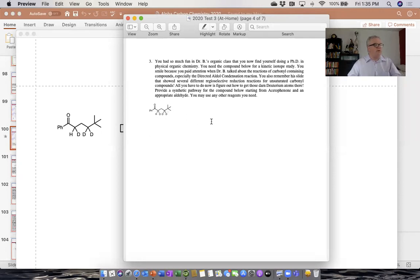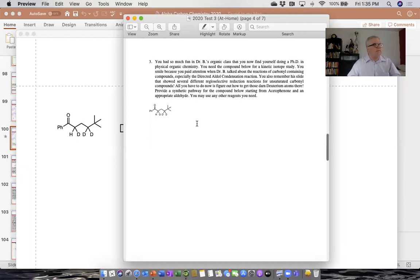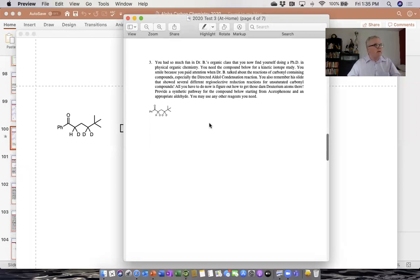Oftentimes we want to do these for mechanistic studies, sometimes for enzyme studies, just to get some information about physical organic things or medicinal things. But oftentimes we want deuterium in selected positions. So how do we go about doing that?